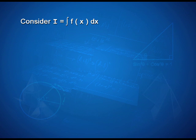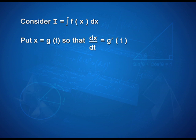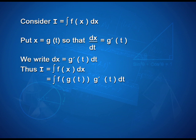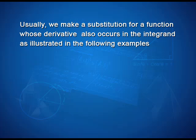Consider I = ∫f(x)dx. Put x = g(t), so that dx/dt = g′(t). We write dx = g′(t)dt. Thus, I = ∫f(x)dx = ∫f(g(t)) · g′(t)dt. This change of variable formula is one of the important tools available to us in the name of integration by substitution. It is often important to guess what will be the useful substitution. Usually, we make a substitution for a function whose derivative also occurs in the integrand, as illustrated in the following examples.